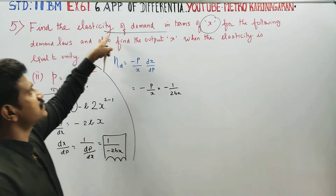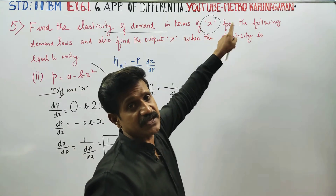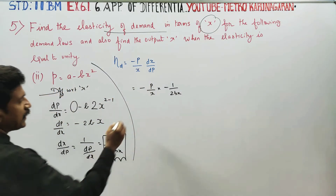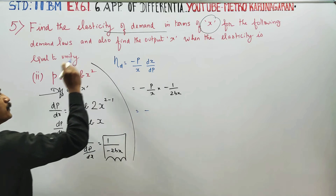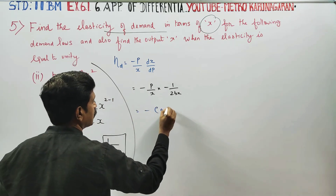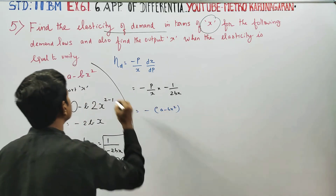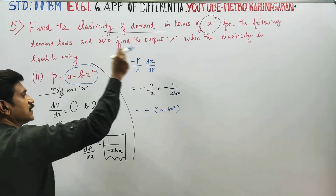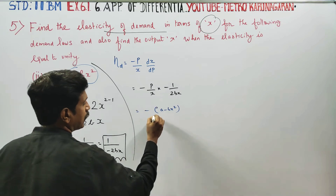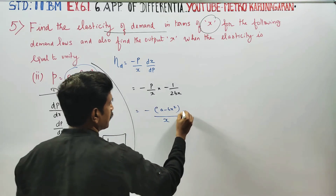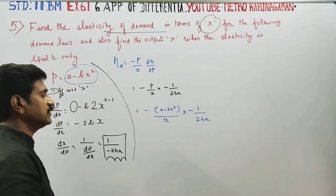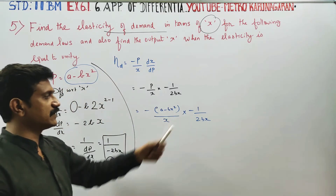If you want the elasticity of demand in terms of x and P, you will replace P with A minus Bx square in the answer. The bracket gives: A minus Bx square, by x, into minus 1 by 2Bx. For minus into minus, the result is positive.